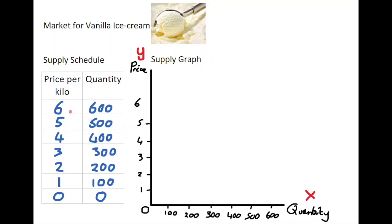If we take these various combinations, we can start off with our origin point of zero price and zero quantity supplied. We go up to a price of one and suppliers are willing to supply a hundred in terms of kilos of vanilla onto the market.